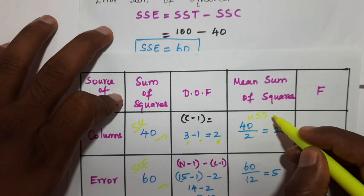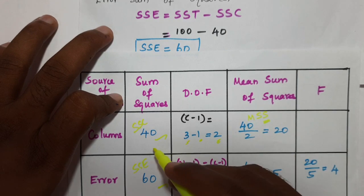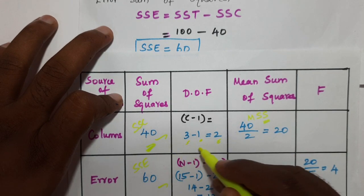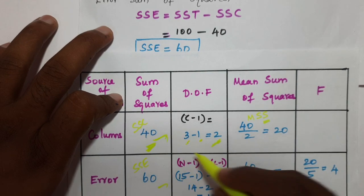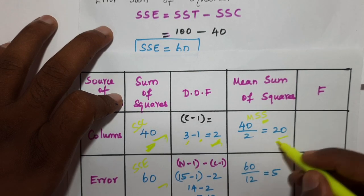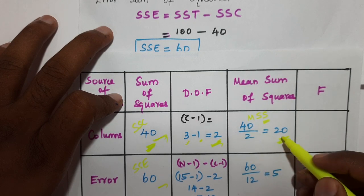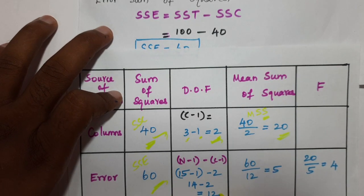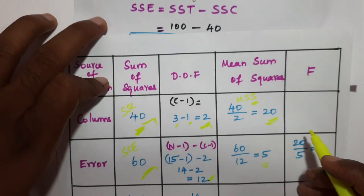Now computing mean squares. MSC = SSC divided by degrees of freedom for columns = 40 divided by 2 = 20. MSE = SSE divided by degrees of freedom for error = 60 divided by 12 = 5.